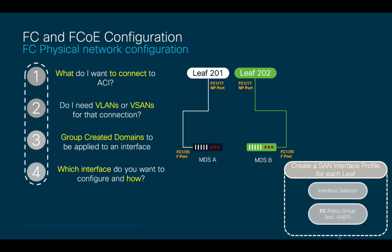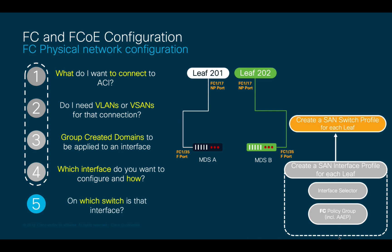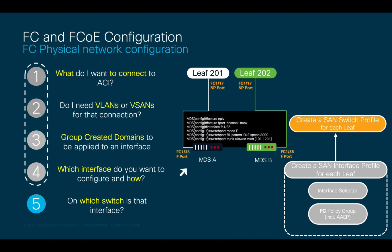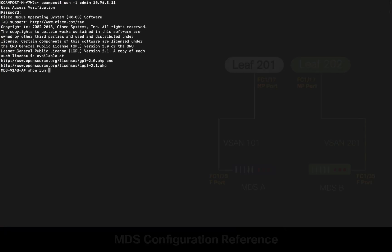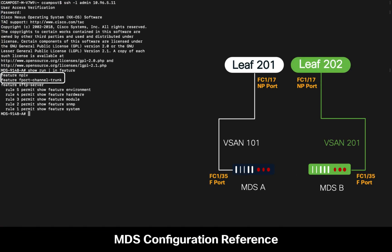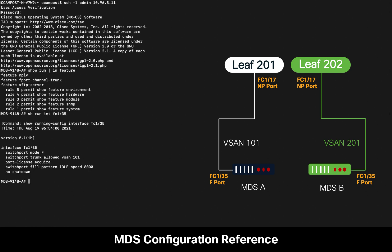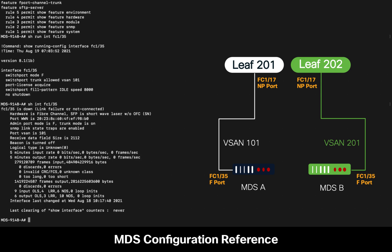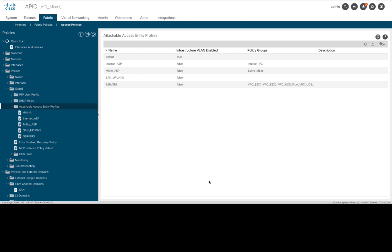Lastly, in step 5, I will associate our SAN interface profile to a SAN switch profile we will also create. Just for your reference, keep in mind that for this to work, the MDS or Fiber Channel switches you use should have NPV enabled as well as F port channel trunk if you're using multiple VSANs. At the interface level, the port type on the MDS switch should be F, and the fill pattern should be set to idle. If we perform a show interface on the MDS interface connecting to my ACI leaf node, in this case FC 1/35, we can see it is currently down as expected.